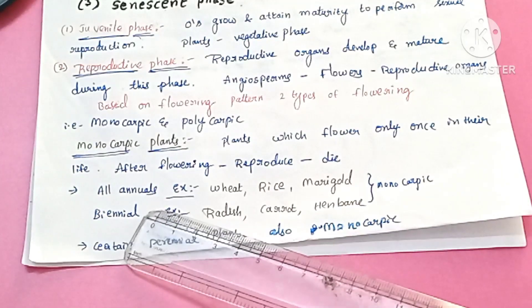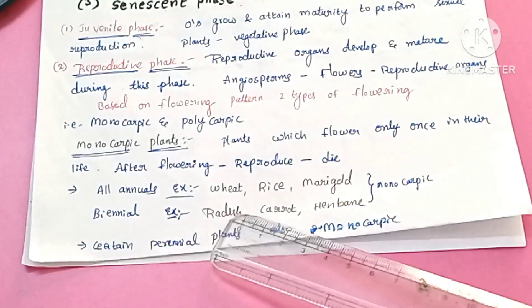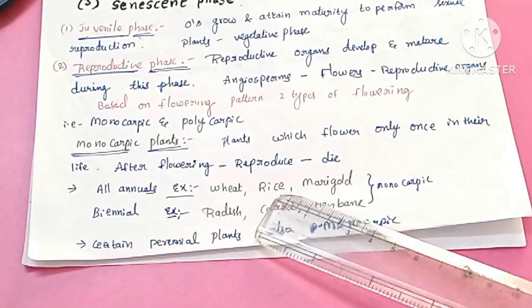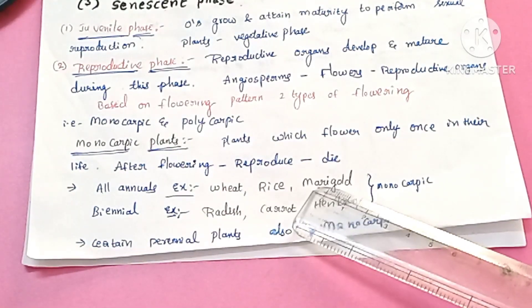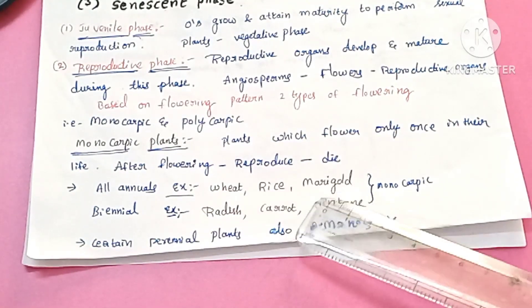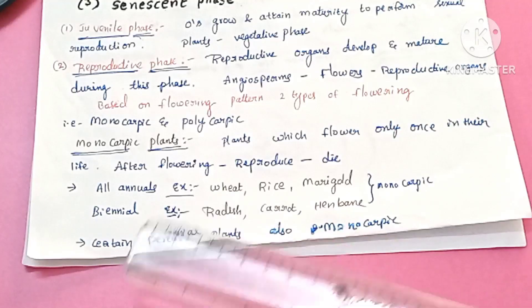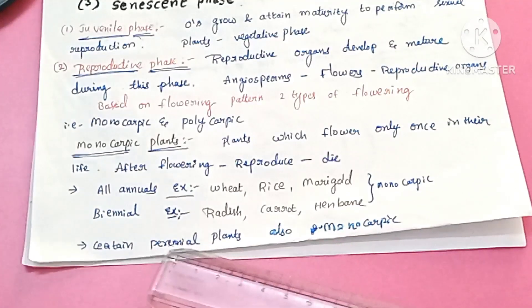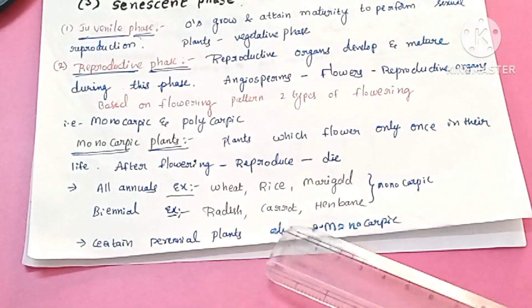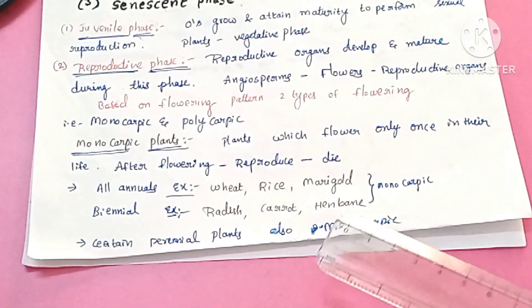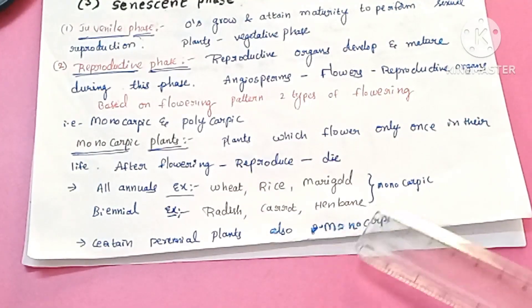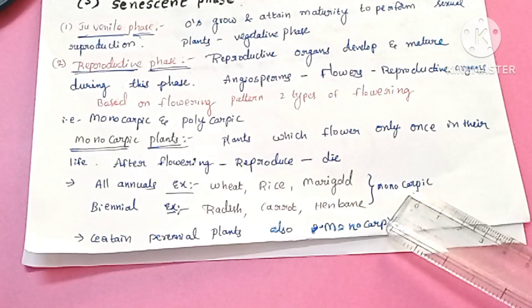These include annual plants such as wheat, rice, and marigold, which flower only once in their life. There are also biennial plants like radish, carrot, and henbane — these are also monocarpic plants.